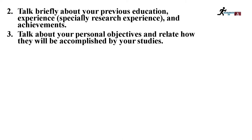Tip number three: talk about your personal objectives and relate how they will be accomplished by your studies. For example, your personal objective might be to join academia as a professor, assistant professor, or associate professor, and for that you need a higher degree which is a PhD — and that's why you are applying for the PhD degree program. That's how you can write about your personal objectives and relate them to your studies.